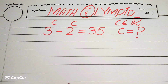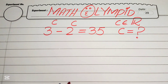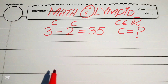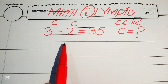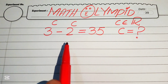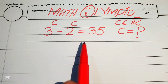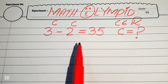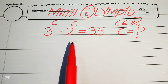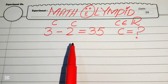Hello everyone, welcome to solve this nice math lumped exponential equation problem. So here we have 3 to the power of c minus 2 to the power of c equals 35, and we solve this problem for the values of c.